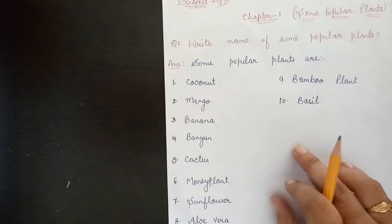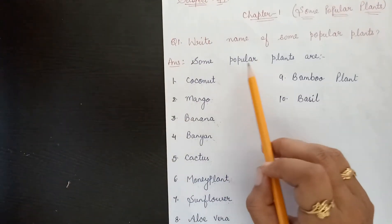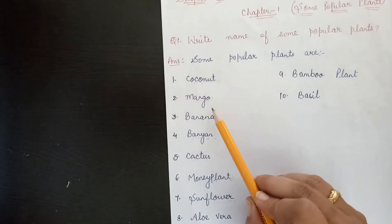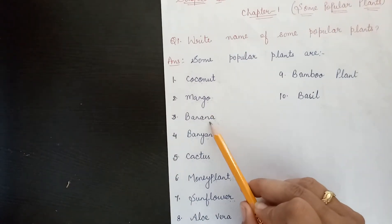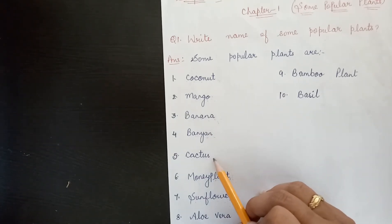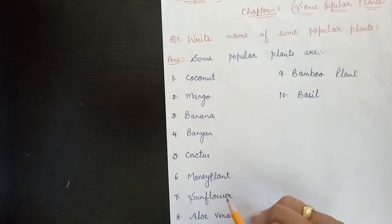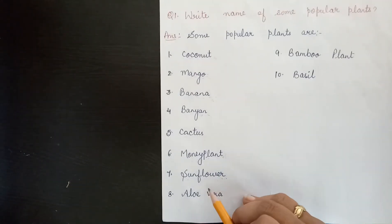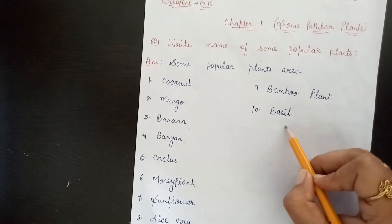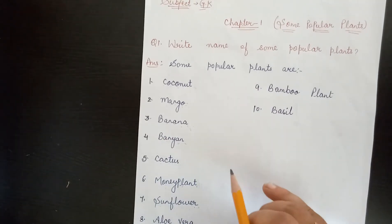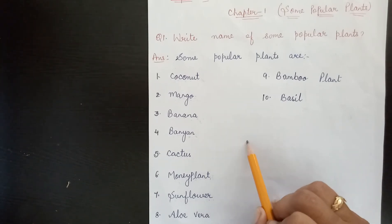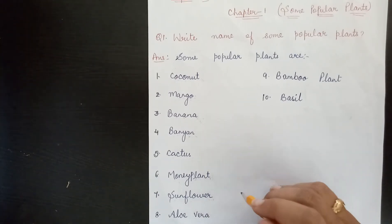Read again. The names of some popular plants are: coconut, mango, banana, banyan, cactus, money plant, sunflower, aloe vera, bamboo plant, and the last one is basil — B-A-S-I-L.